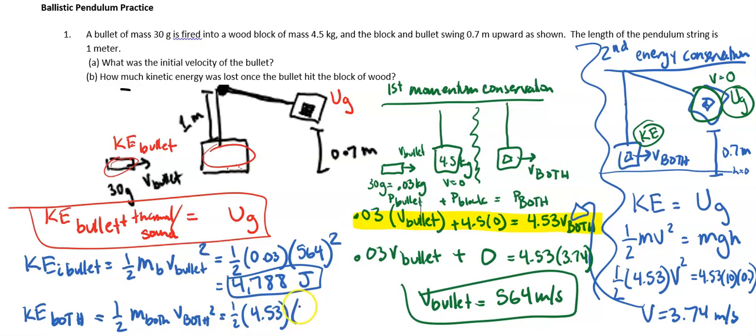The velocity of both, we got that to be 3.74 squared. Cool. And I plug that all into my handy-dandy calculator. I got 31.68 joules. Okay.